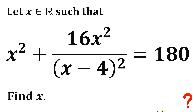Let x be a real number such that it satisfies the equation x squared plus 16x squared over (x minus 4) quantity squared equals 180. The goal is to solve for all real values of x that satisfy this equation.